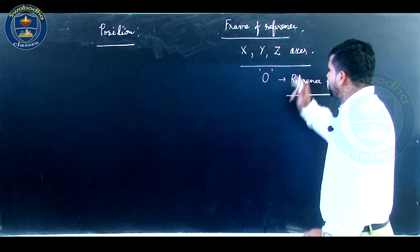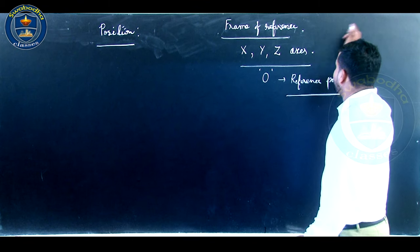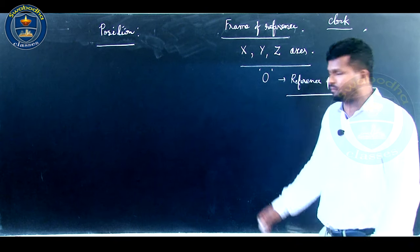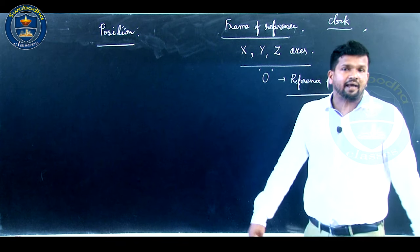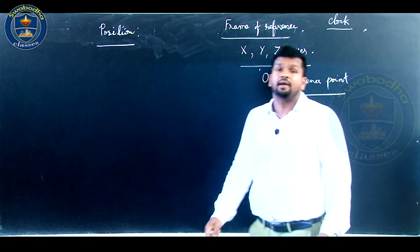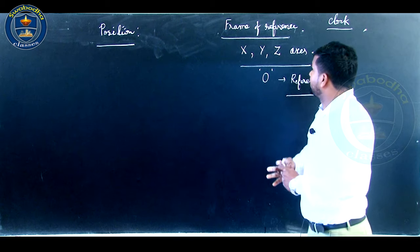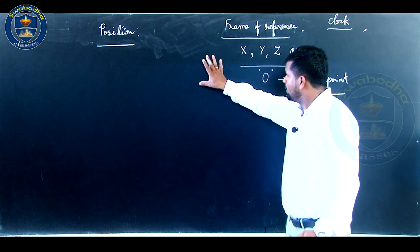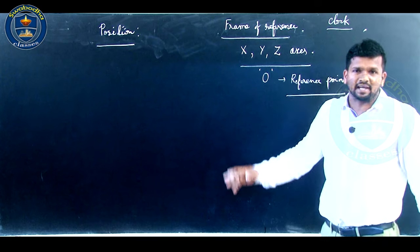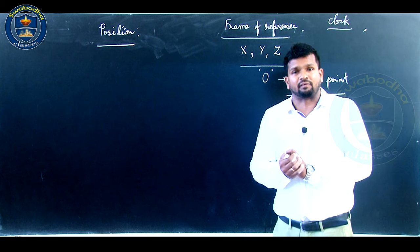These are the three mutually perpendicular axes, and to measure time we position a clock. Along with the clock, this Cartesian coordinate system will be treated as a frame of reference. With respect to a frame of reference, we are going to specify the position of the object — this is very important. To measure time we position a clock, and with respect to that frame of reference we specify the position of the object.